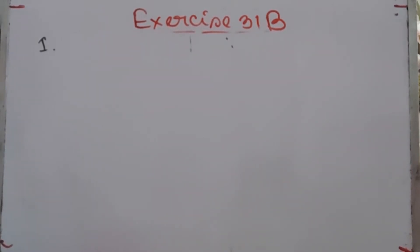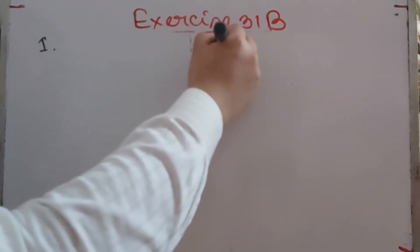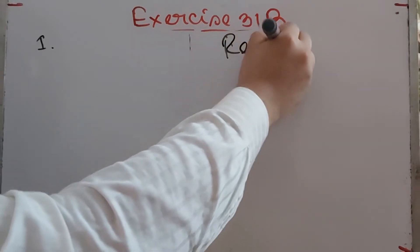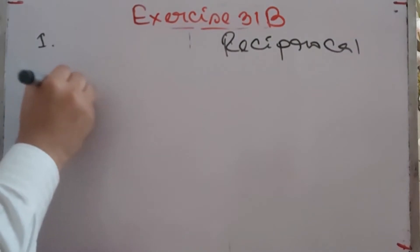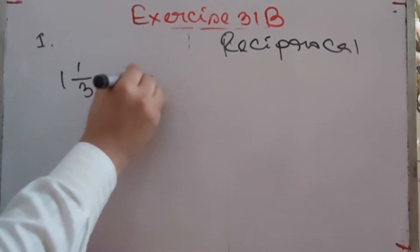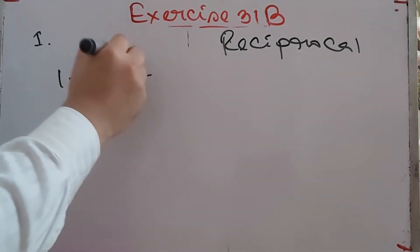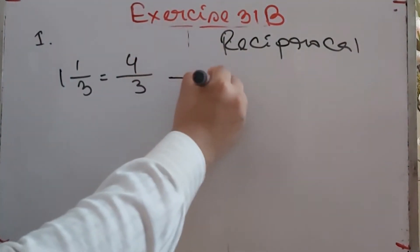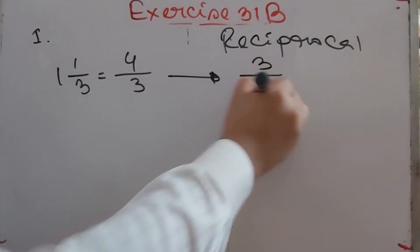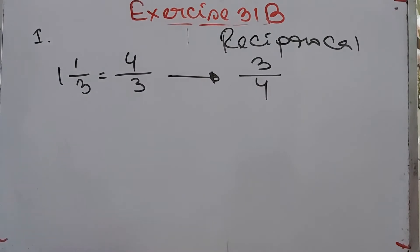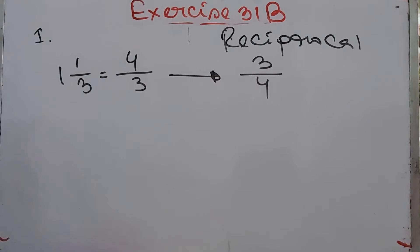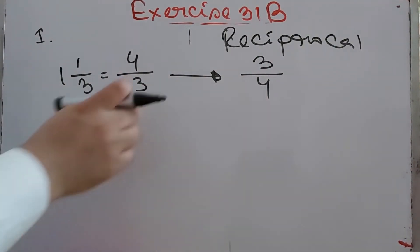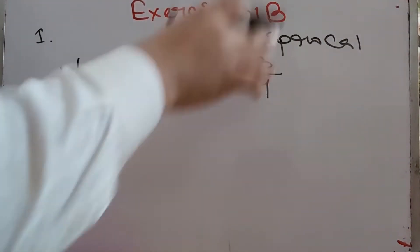We already solved Exercise 3.1a, so now we'll just solve the problems. The reciprocal of 1 whole 1/3: that means 3×1 = 3 plus 1 = 4/3, so the reciprocal will be 3/4. We just interchange the numerator and denominator. The product of a fraction and its reciprocal is 1.